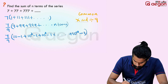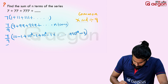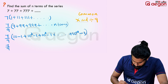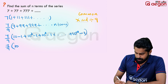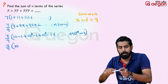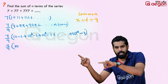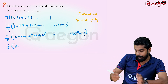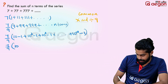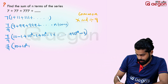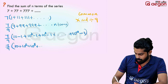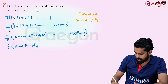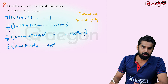Now this is 7 by 9 into the sum: (10 minus 1) + (10 squared minus 1) + (10 cubed minus 1) + ... We separate this into: 10 + 10 squared + 10 cubed + ... up to 10 raised to n. That series is a GP with first term 10 and common ratio 10.